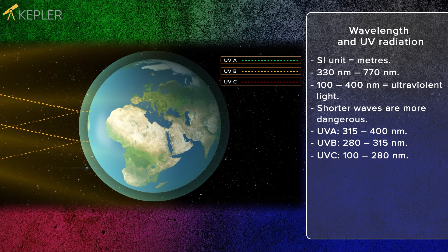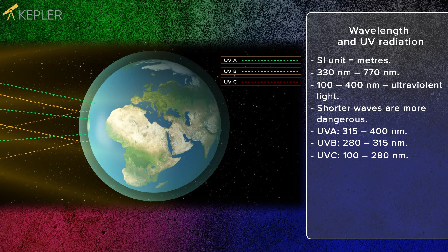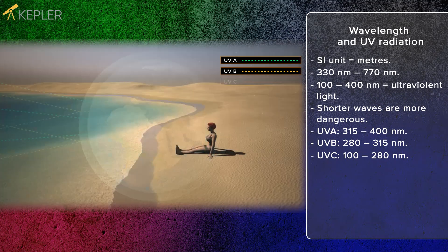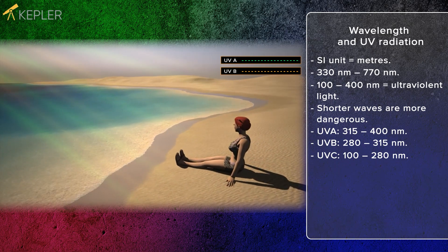It cannot filter out all UVB or UVA radiation, making it dangerous to sunbathe for a long time. If a person sunbathes for a protracted period, it can lead to skin cancer.